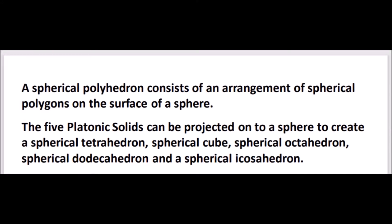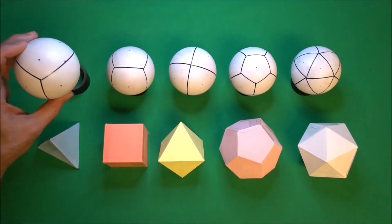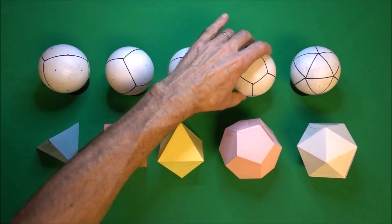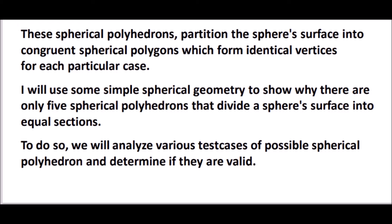The spherical polyhedron consists of an arrangement of spherical polygons on the surface of a sphere. The five platonic solids can be projected onto the surface of a sphere to create a spherical tetrahedron, a spherical cube, a spherical octahedron, a spherical dodecahedron, and a spherical icosahedron. These spherical polyhedra partition the surface of the sphere into congruent spherical polygons which form identical vertices for each particular case. I will use simple spherical geometry to show why there are only five spherical polyhedra that can divide a sphere's surface into equal sections, by analyzing various test cases and determining if they are valid.